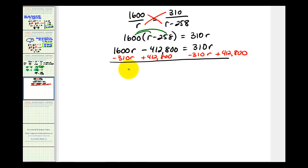So here we'll have 1,290r, this will be zero, equals 412,800. Divide both sides by 1,290, we have r equals 320.